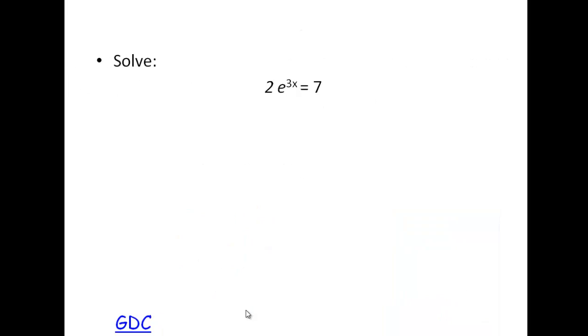Okay let's try this one then, slightly more difficult but again using our log laws. We get ln e to the 3x equals 7 over 2, we're just dividing by 2 so we get 3.5.